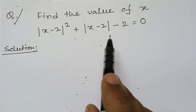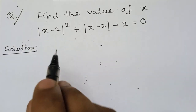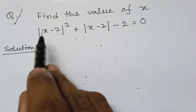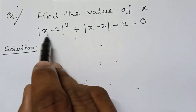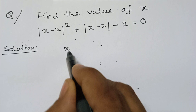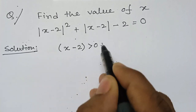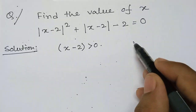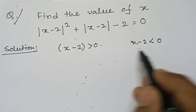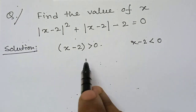To solve this kind of equation, we have to consider two cases. The value of this expression will be either x minus 2 greater than 0, or x minus 2 less than 0. For these two cases, the solution also will be different.